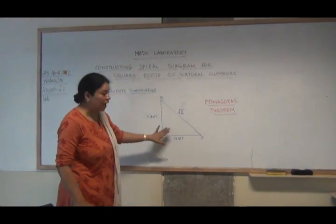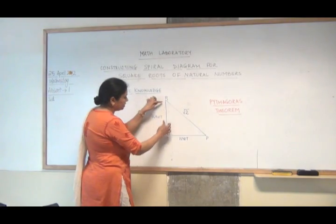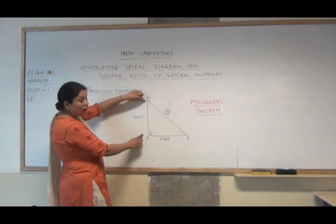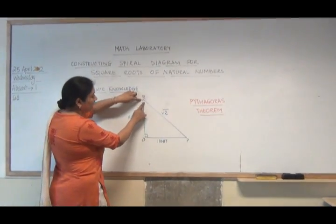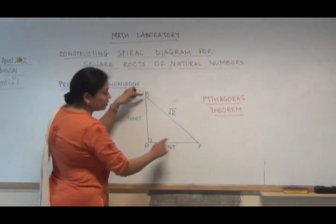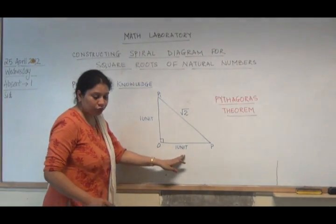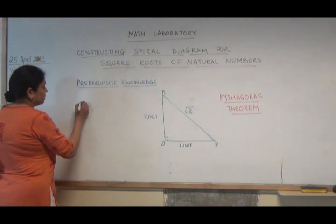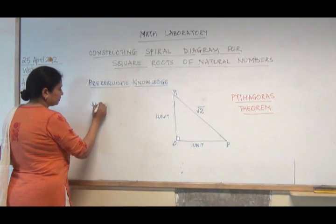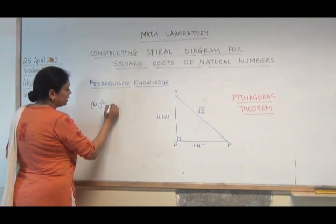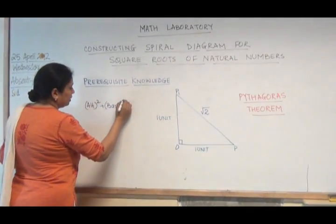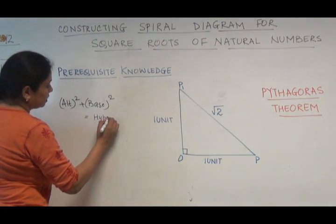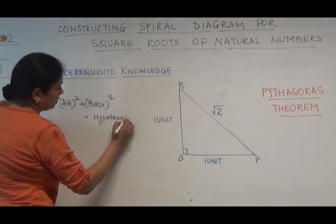We understood the explanation of Pythagoras theorem when we have a right angle triangle, where this is the height and this is the base. Base is of one unit and altitude or the height is of one unit. It is always the square root of two units. As per Pythagoras,